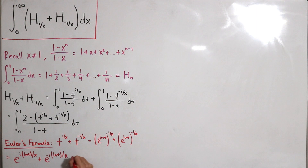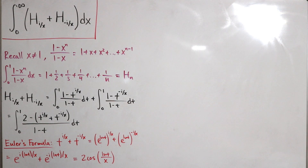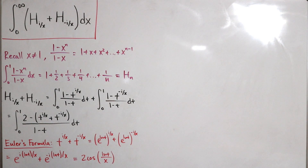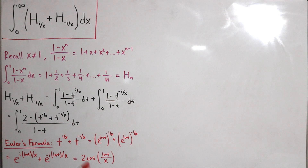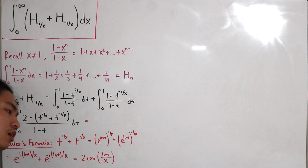By Euler's formula, cos(x) = (e^(ix) + e^(−ix))/2, so e^(i·ln(t)/x) + e^(−i·ln(t)/x) equals 2·cos(ln(t)/x). This is the neat part where complex analysis comes in — specifically Euler's formula applied to simplify the sum.